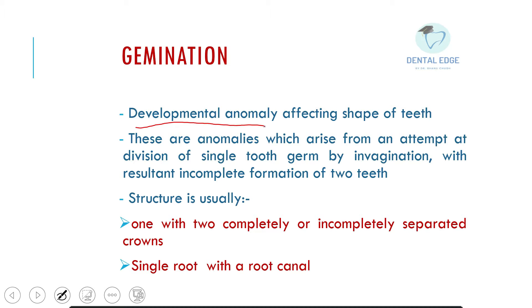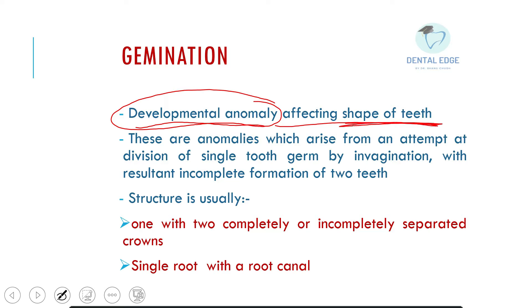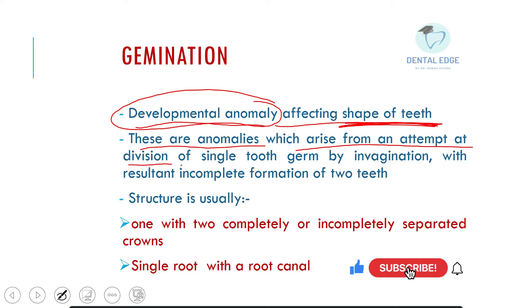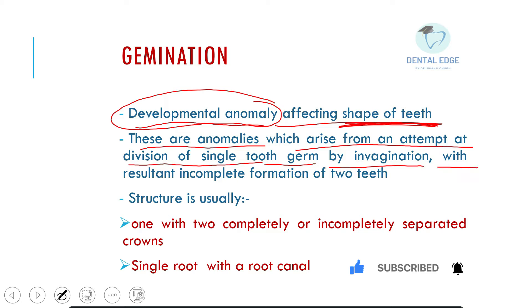Germination is a developmental anomaly affecting the shape of teeth, from the chapter on developmental disturbances of teeth. These are anomalies which arise from an attempt at division of a single tooth germ by invagination, with resultant incomplete formation of two teeth.